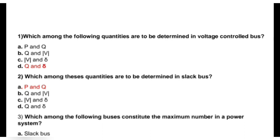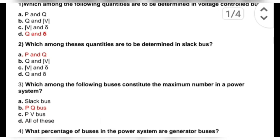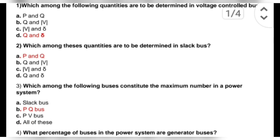Second question is: which among these quantities are to be determined in a slack bus? Options are P&Q, Q&V, V&L, or Q&D. The correct option is P&Q.